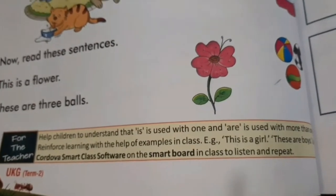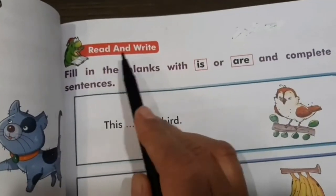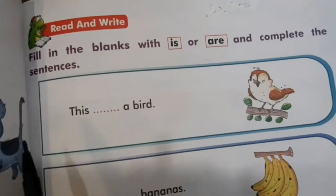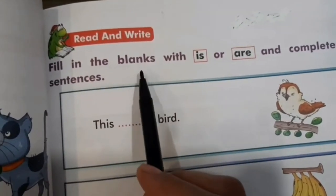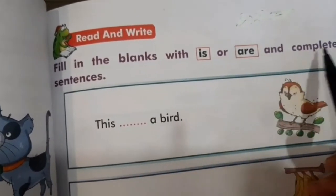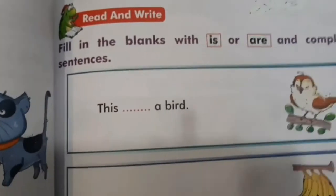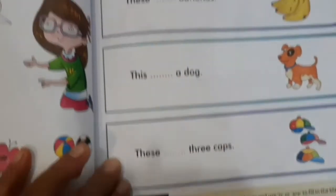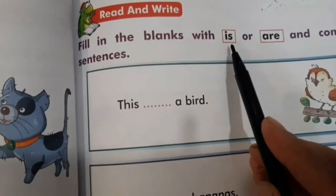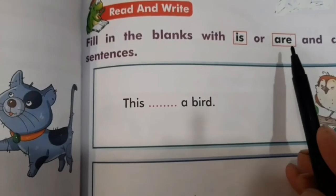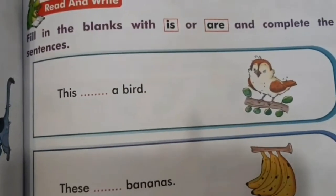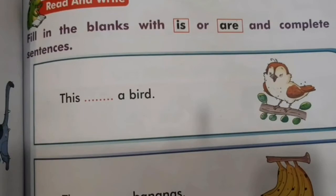Okay children, now we move to the next page. Read and write. Hameh yehaan peh padhna hai aur phir baad mein likhna hai. Fill in the blanks with 'is' or 'are' and complete the sentences. Hameh yehaan peh jo examples diye hain, exercise mein us mein kya fill up karna hai? 'Is' ya toh 'Are'. Picture dekhenge, uske baad hum fill up karenge. Okay?